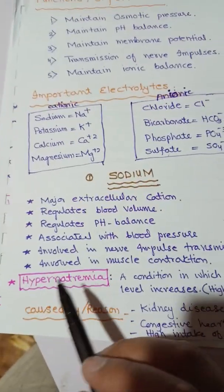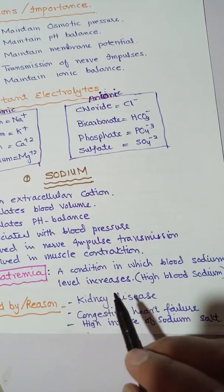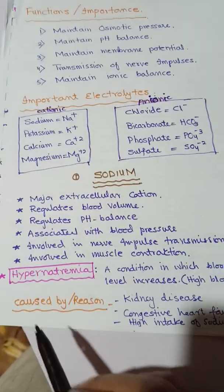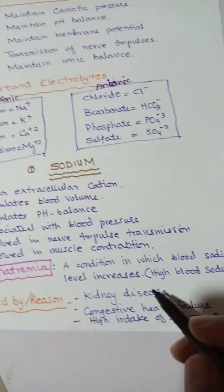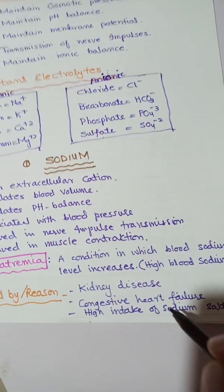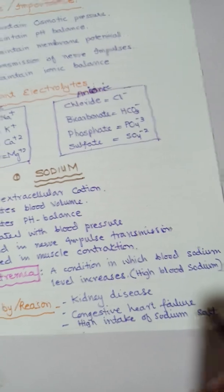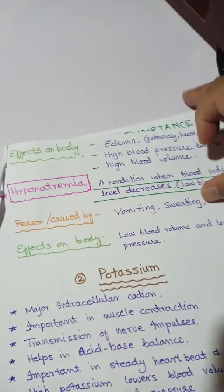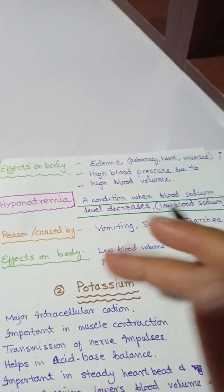The first condition is hypernatremia — the condition in which blood sodium level increases inside our body. Hypernatremia occurs because of kidney diseases, congestive heart failure, or high intake of sodium salts in our diet. The effects of hypernatremia on our body include edema, which is the retention of extracellular fluid inside the pulmonary organs, heart, or muscles.